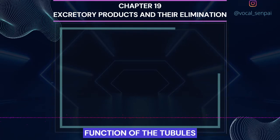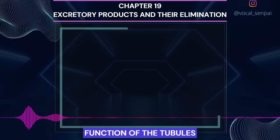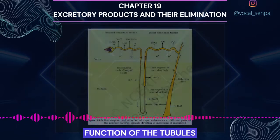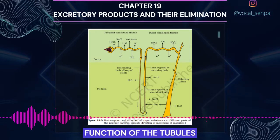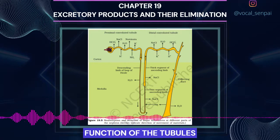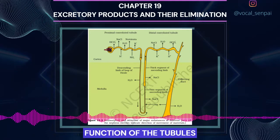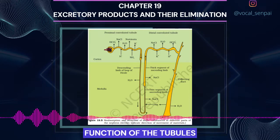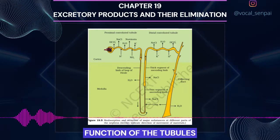Function of the Tubules. Proximal Convoluted Tubule, PCT. PCT is lined by simple cuboidal brush border epithelium which increases the surface area for reabsorption. Nearly all of the essential nutrients and 70-80% of electrolytes and water are reabsorbed by this segment. PCT also helps to maintain the pH and ionic balance of the body fluids by selective secretion of hydrogen ions and ammonia into the filtrate and by absorption of HCO3- from it.